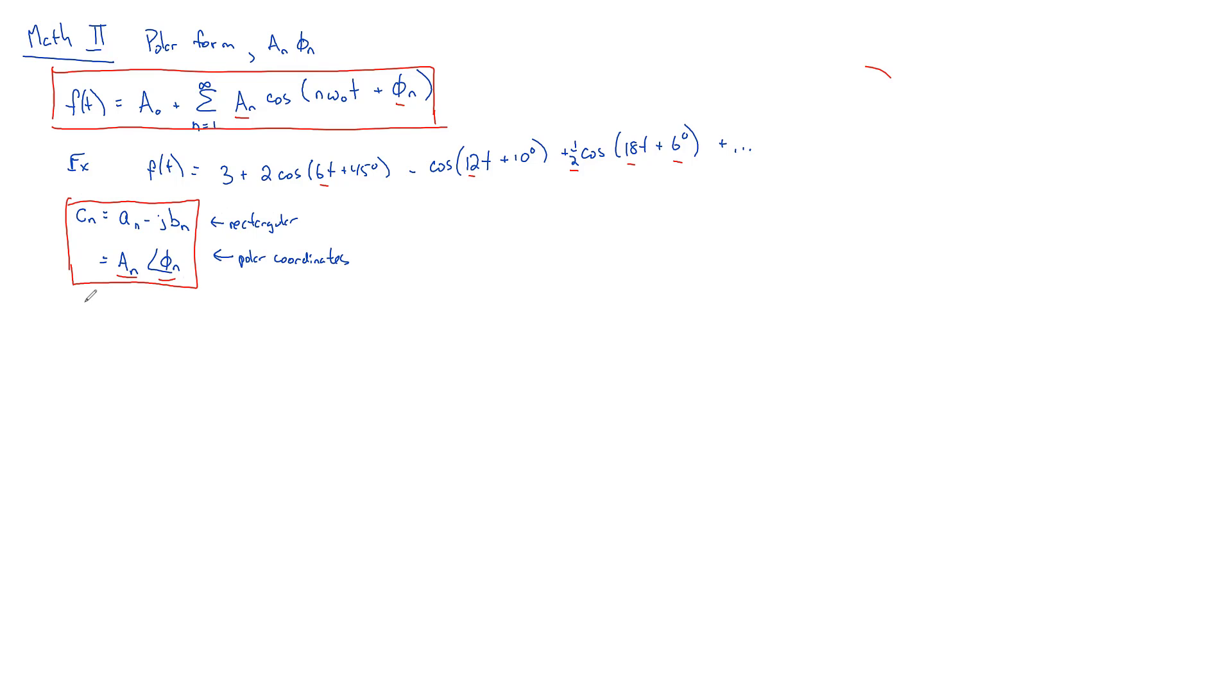And that DC term, your A sub 0 up here, is the exact same as your little A sub 0 that you found earlier, which is the exact same as your DC term, which is the exact same thing as your average term.